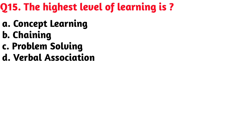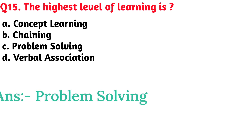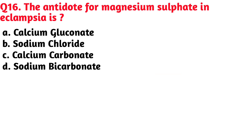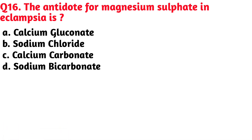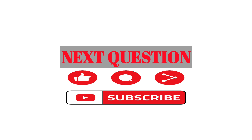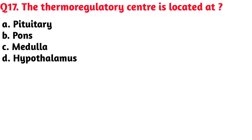The highest level of learning is — Option C, problem solving, is the correct answer. The antidote for magnesium sulfate in eclampsia is — Option A, calcium gluconate, is the correct answer. The thermoregulatory center is located at —